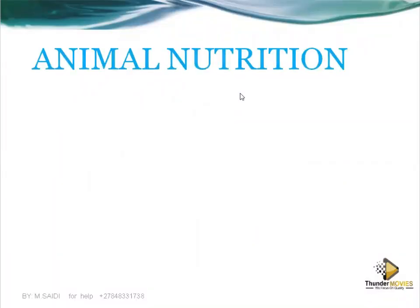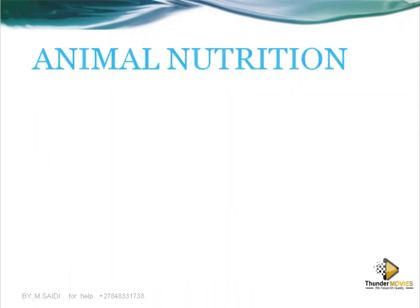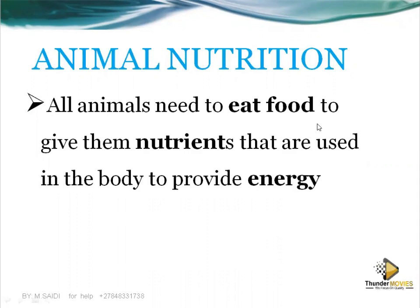Today we are going to look at animal nutrition — how food is being digested and then absorbed into the body. When you talk about animal nutrition, you're saying that animals need to eat to give them nutrients that are used in the body. Basically, nutrition is about getting nutrients from the outside environment into our bodies. Animals need to eat; when they eat, they obtain these nutrients, which provide energy into the body so that organisms can live.